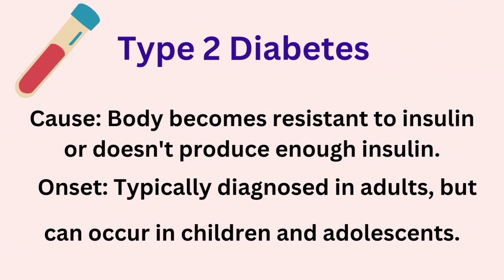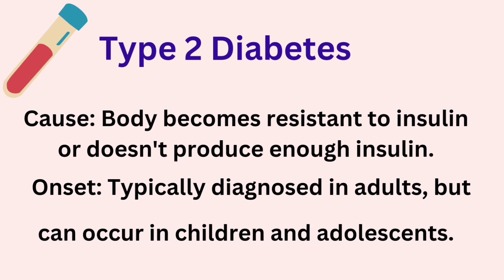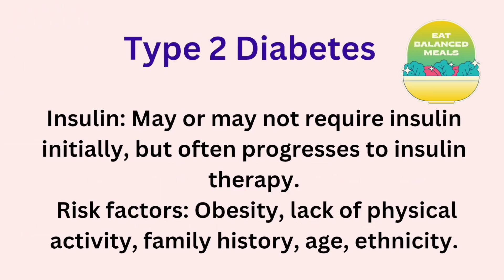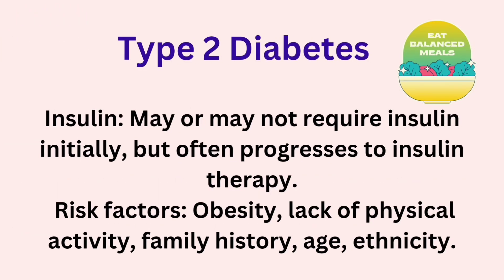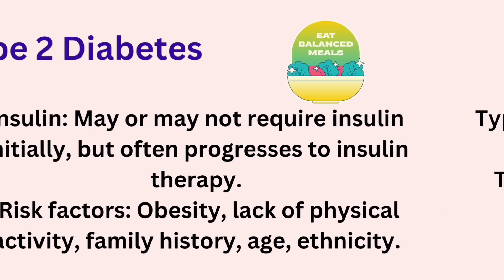Type 2 diabetes: The body becomes resistant to insulin or doesn't produce enough insulin. Onset is typically diagnosed in adults, but can occur in children and adolescents. In terms of insulin, it may or may not require insulin initially, but often progresses to insulin therapy. Risk factors include obesity, lack of physical activity, family history, age, and ethnicity.